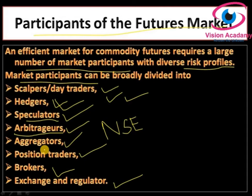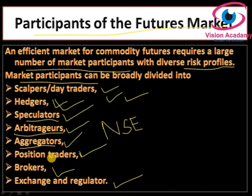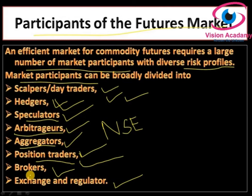Aggregators are allowed to collect commodities from farmers and sell in the futures market — they have direct contact with farmers. Position traders maintain overnight positions, which may run into weeks or even months, in anticipation of favorable movement in commodity futures prices. They may hold positions that carry huge risks but may also earn big profits; they are ready to wait for the right position.